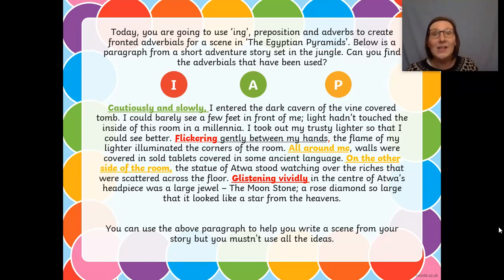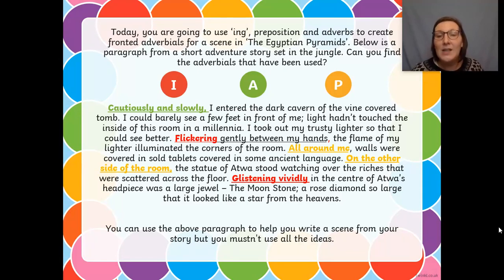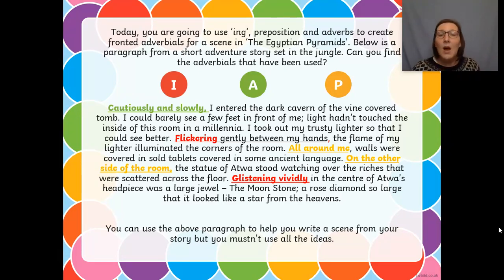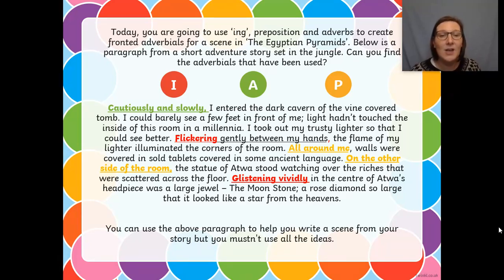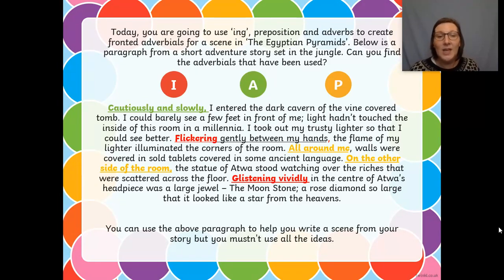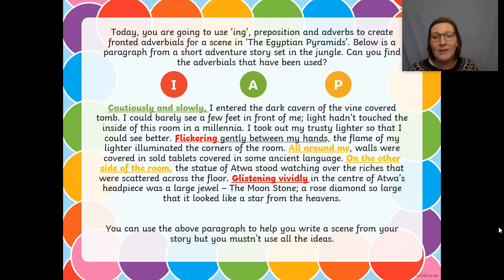Cautiously and slowly — that's how somebody is doing something, remember the adverbs of manner — I entered the dark cavern of the vine-covered tomb. I could barely see a few feet in front of me. Light hadn't touched the inside of this room in a millennium. I took out my trusty lighter so I could see better. Flickering gently between my hands.